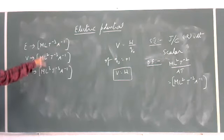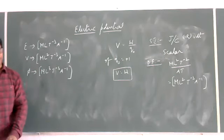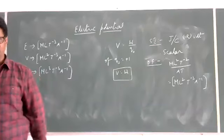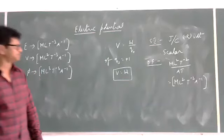Try to remember: the dimensional formula for electric intensity is MLT⁻³A⁻¹, for potential it is ML²T⁻³A⁻¹, and for electric flux it is ML³T⁻³A⁻¹. Don't get confused — everything is the same except the power of L: for electric intensity it is L¹, for potential it is L², and for electric flux it is L³. Tomorrow we will discuss thoroughly about electric potential. Thank you.